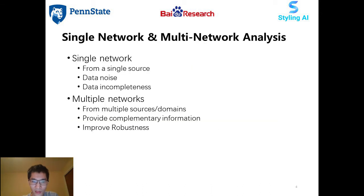In most cases, a single network is obtained from a single source. Due to technical limitations, privacy and security reasons, single network analysis methods suffer from data noise and data incompleteness problems. On the other hand, multiple networks are obtained from multiple sources and with multiple formats. These related networks provide complementary information to reduce noise and enhance the robustness and accuracy of network analysis.